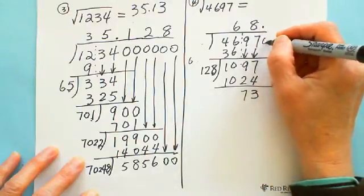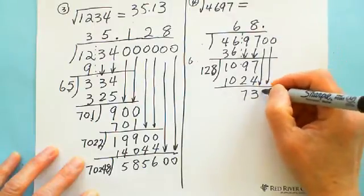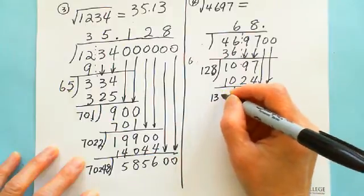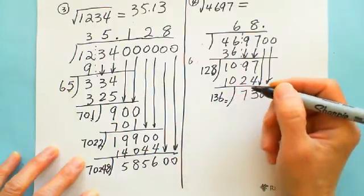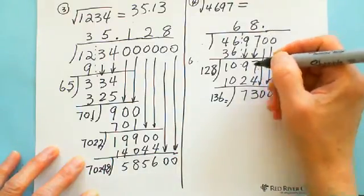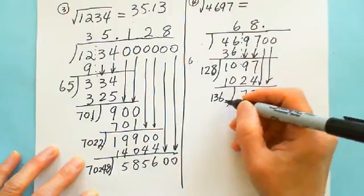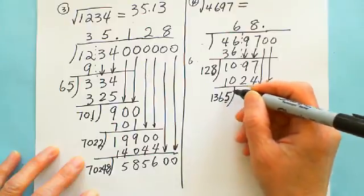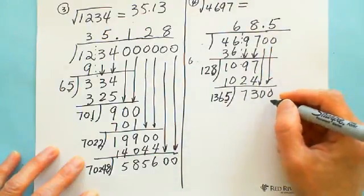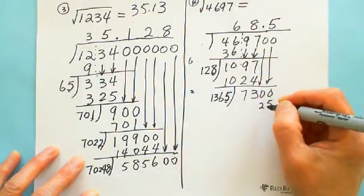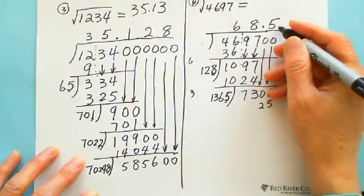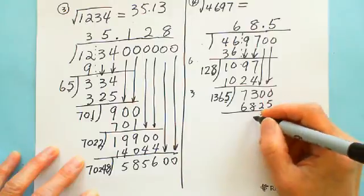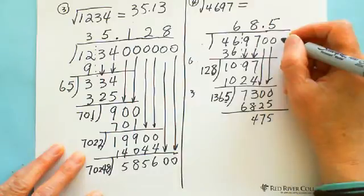Put the decimal point here. Carry down the next two digits: add two zeros, giving 700. Double these two digits — double 68 — to get 136. Estimate the next digit. If you try 5: 5 times 136 is 680. If you try 6: 6 times 136 is 816 — too big. So this digit is 5. With 5 here: 5 times 5 is 25, 5 times 6 is 30 — carry 3 — gives 32, and 5 times 3 plus carry is 18. You have a remainder of 4. To get two decimal places, add another two zeros.